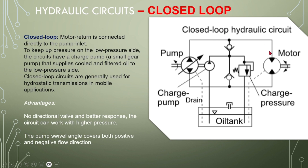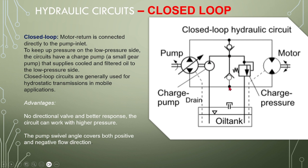Heat will be produced during closed circuit operation and there is no way to remove this heat. So you have to have special arrangements to introduce new oil and remove oil that has been in the system. For that purpose you have to use a charge pump, because if the pump has internal leakages this small circuit will lose some oil. To avoid that, the charge pump continuously sucks oil from the tank and puts it back into the system whenever needed.